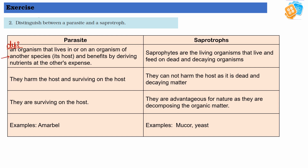Then saprotrophs: living organisms that live and feed on dead and decaying organisms. So this is the definition of saprotrophs. Parasites harm the host and survive on it, whereas saprotrophs cannot harm the host as it is already dead and decaying matter.